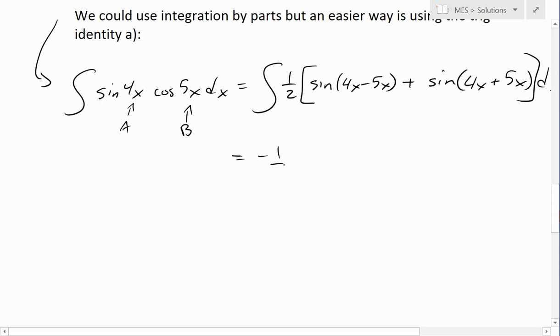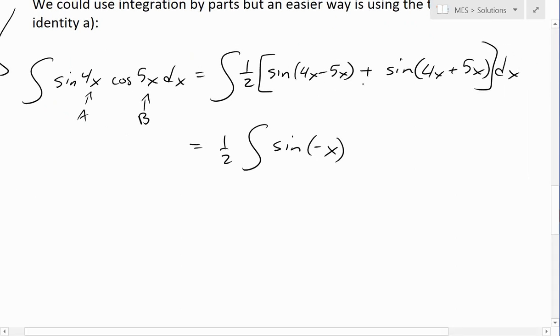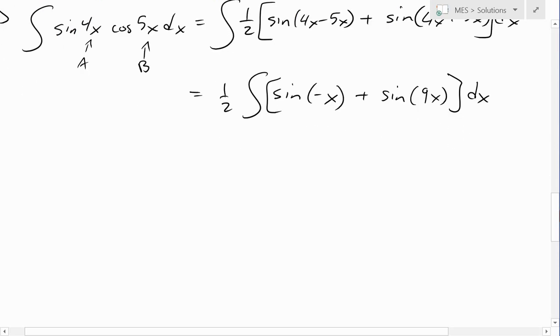So this simplifies to 1 half, and now integral of this is going to be sine negative x, that's just 4x minus 5x, plus now this is sine of 9x, and this is all dx.